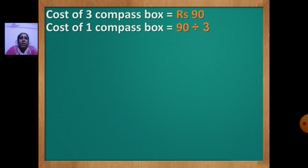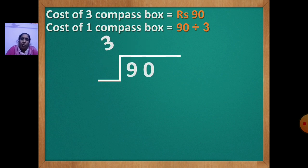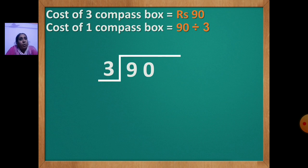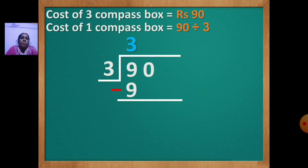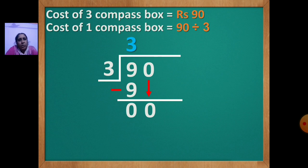Now you are going to do the division. Draw the line, write 90 inside, 3 will come out. You have to say the table of 3. 3 ones are 3, 3 twos are 6, 3 threes are 9. So 3 will go up and 9 will come down. Draw the line, put the sign of minus. 9 minus 9 is 0. Now the next number is 0 — bring that 0 down. In the table of 3, 3 zeros are 0, so write 0 up and 0 down. Draw the line, put the sign of minus. 0 minus 0 is 0. So your answer is 30.